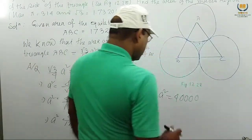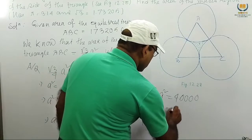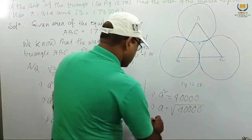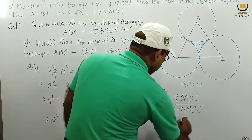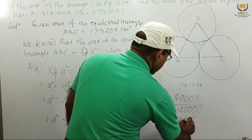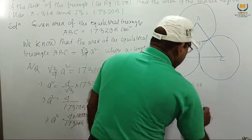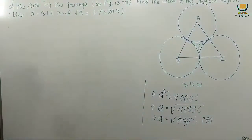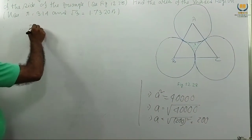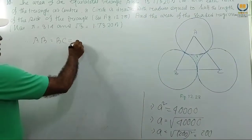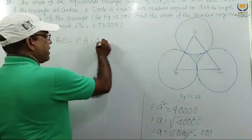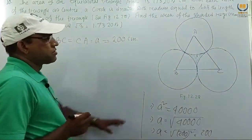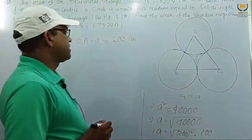So a² = 40000, which means a = √(200²) = 200. Therefore, AB = BC = CA = a = 200 cm. The length of each side is 200 cm.